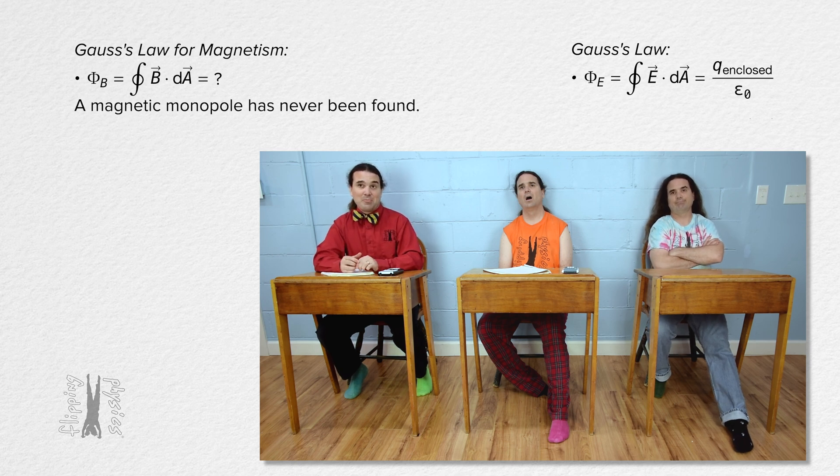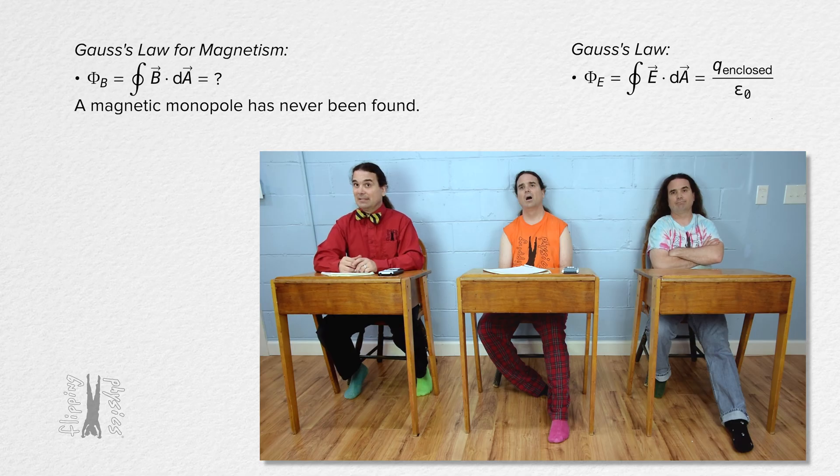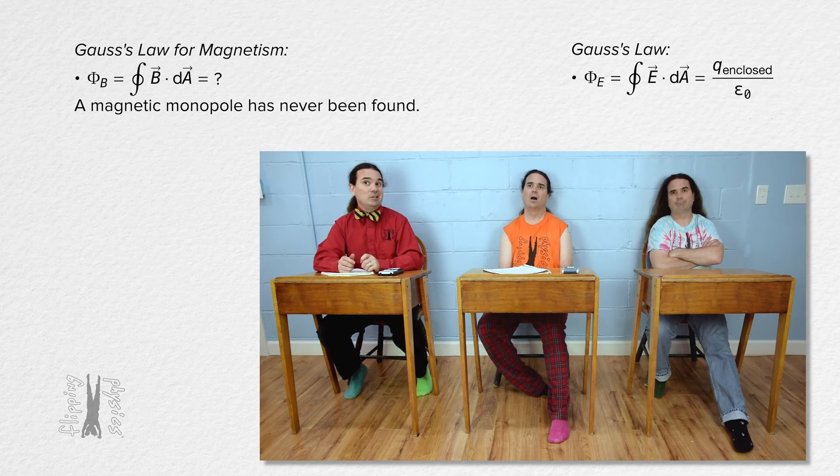A magnetic monopole has never been found in nature or in a man-made experiment, meaning we cannot prove magnetic monopoles do not exist. However, one has never been found, so at this point we assume that magnetic monopoles do not exist.